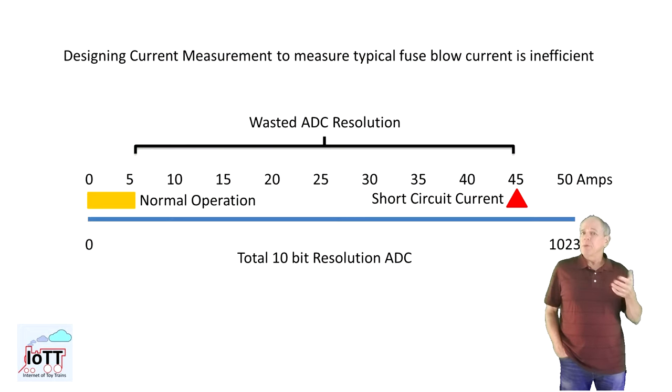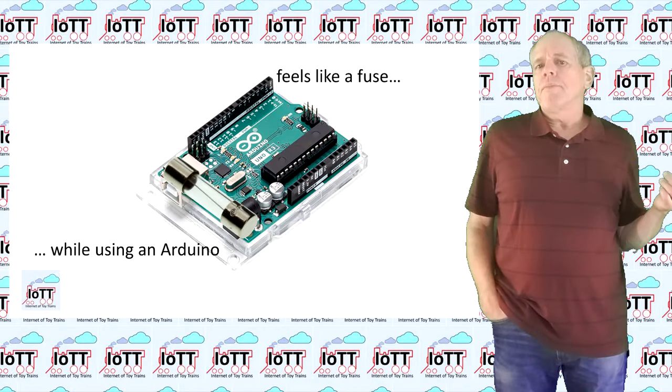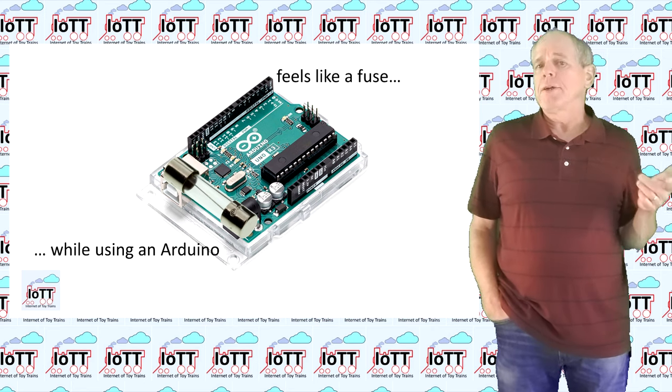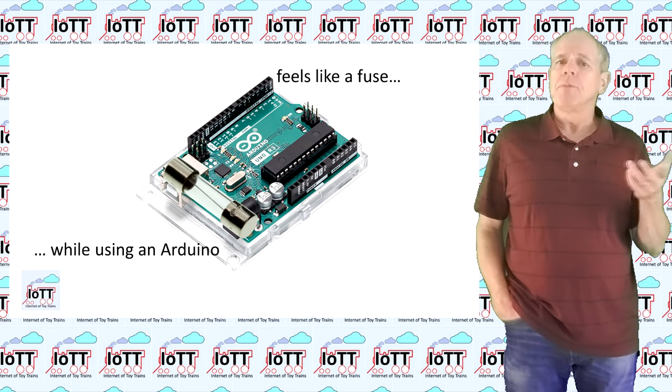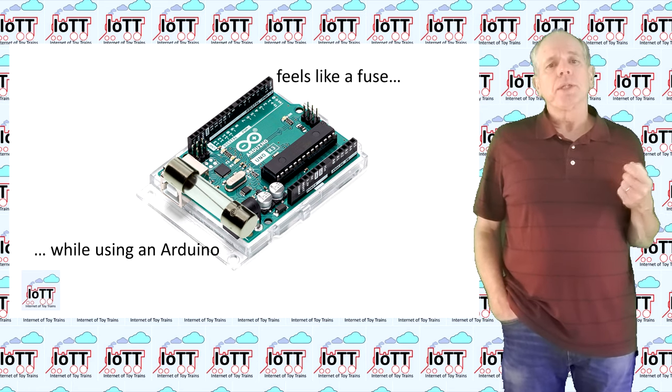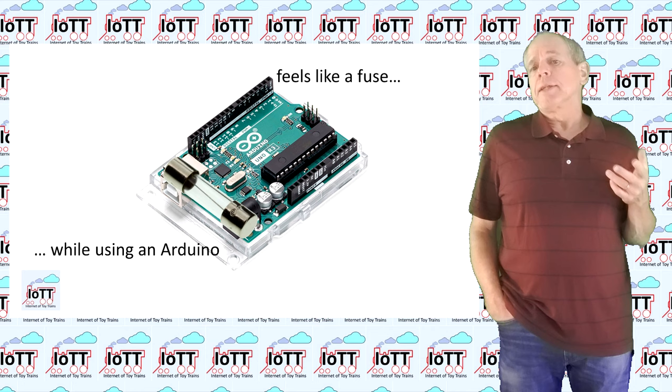And the second problem is that even if the layout can produce the current, we cannot measure it accurately with the typical 10 or 12 bit analog to digital converter of the microcontroller. So, as always in life, we need to find a compromise and create something that behaves similar to a real fuse but is possible to implement using a microcontroller.